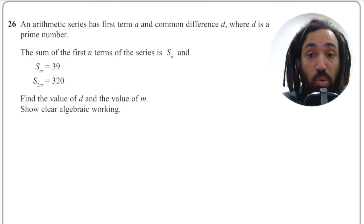It's question 26, the final question on one of the papers and it reads as follows. An arithmetic series has first term A and common difference D, where D is a prime number.